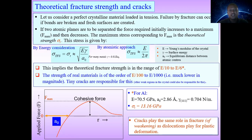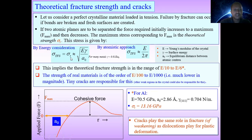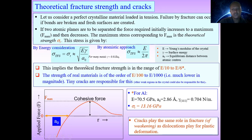If two atomic planes are to be separated, the force required initially increases to a maximum F-max and then decreases. The maximum stress corresponding to F-max is the theoretical fracture strength sigma T. This stress is given by the formula sigma TFS — theoretical fracture strength — which is approximately equal to the square root of E times gamma over A-naught.